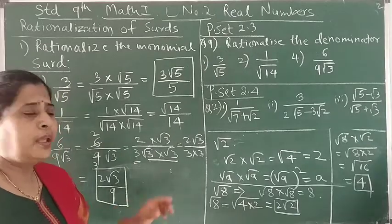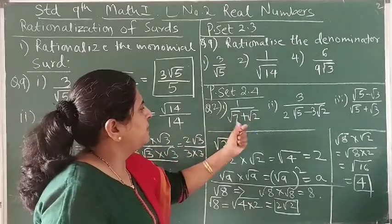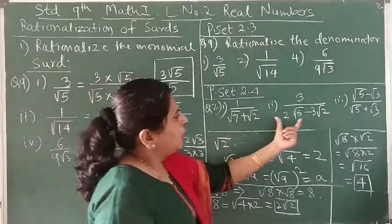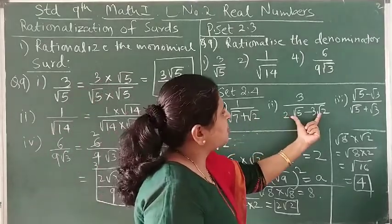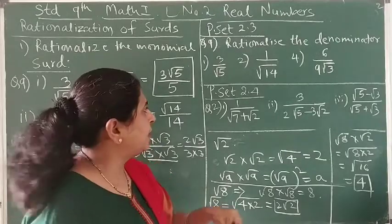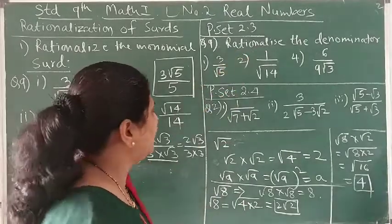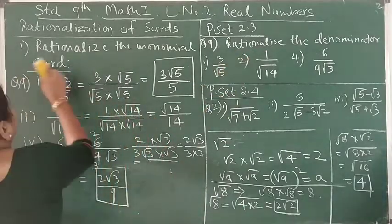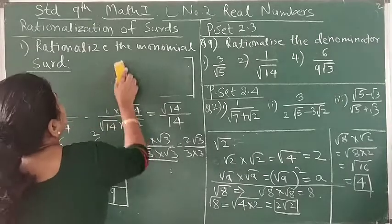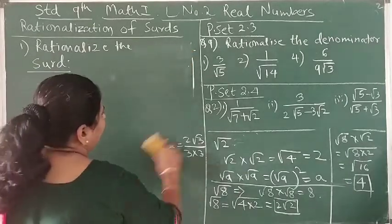Now, when you have a binomial in the denominator — meaning either a sum or subtraction of two irrational numbers — how can we rationalize the denominator? Let's see that. We are going to see the second part: rationalizing the binomial.